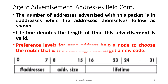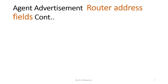Preference levels for each address help a node to choose the most preferred router. This is the representation of the route address fields in the agent advertisement structure.